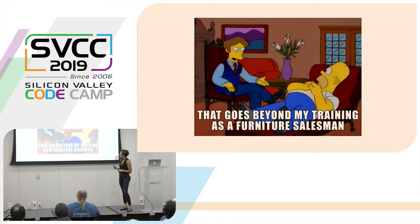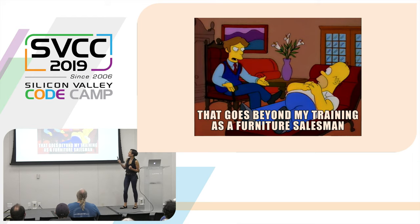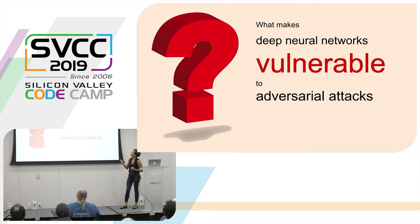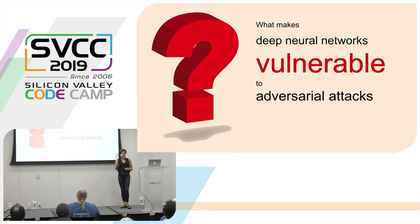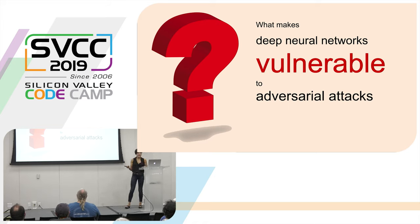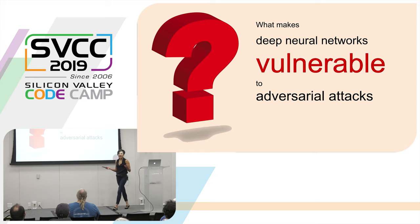In order to better arm our models, let's see if we can better understand or diagnose what it is about deep learning models that actually makes them vulnerable to these attacks. What do you think it is about deep neural networks that makes them vulnerable to adversarial attacks?